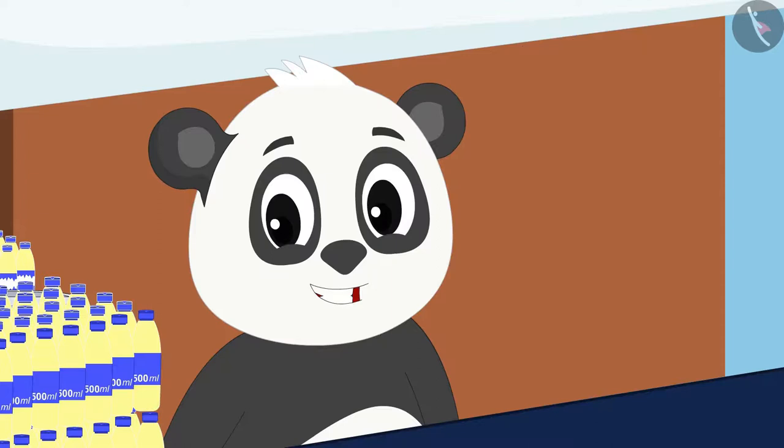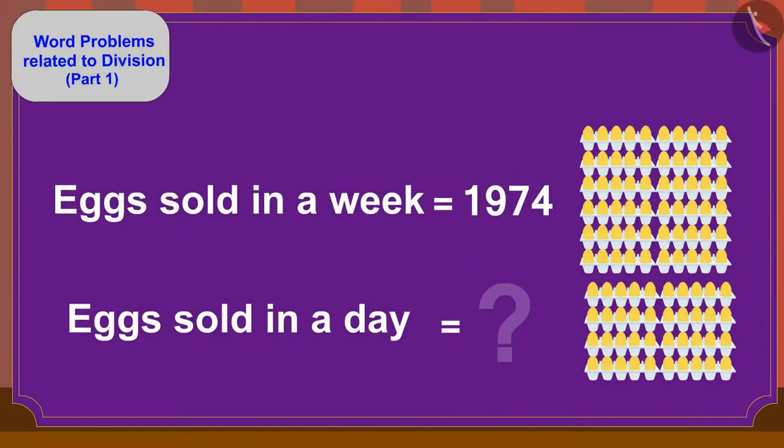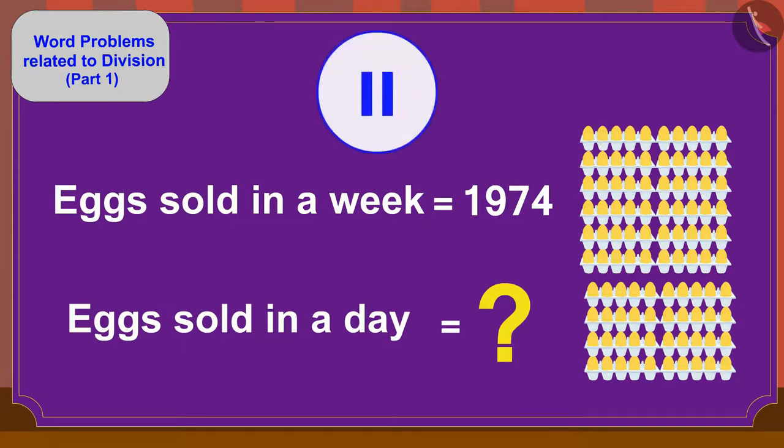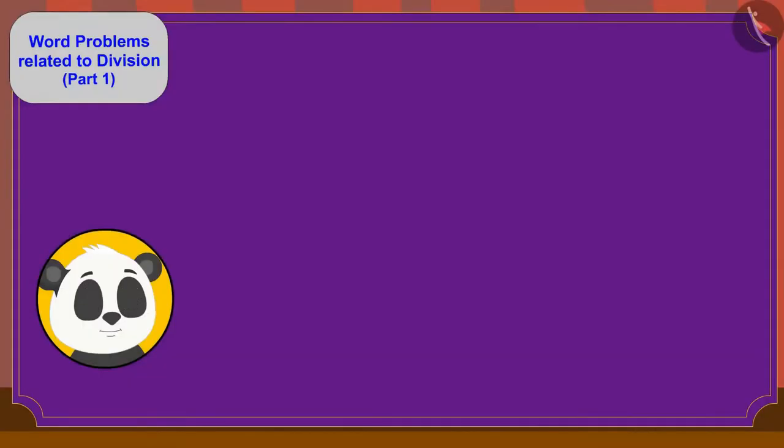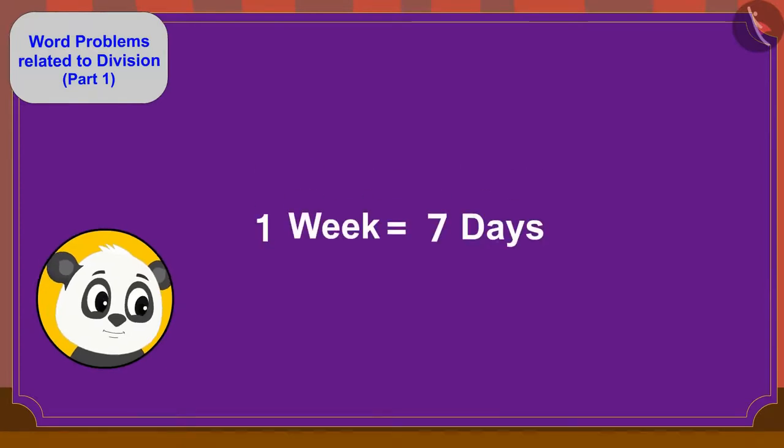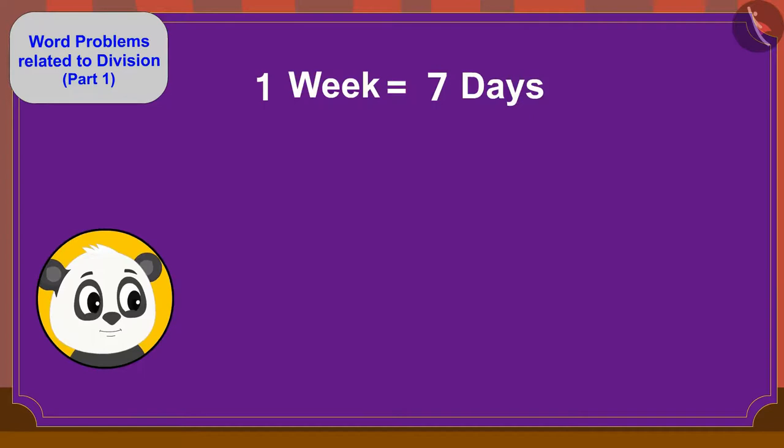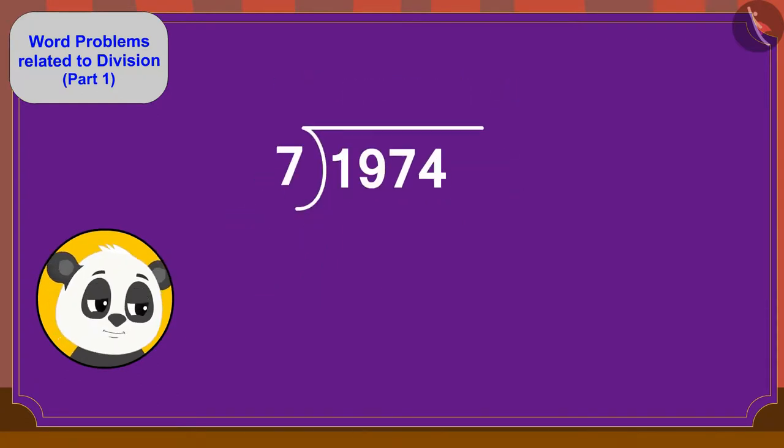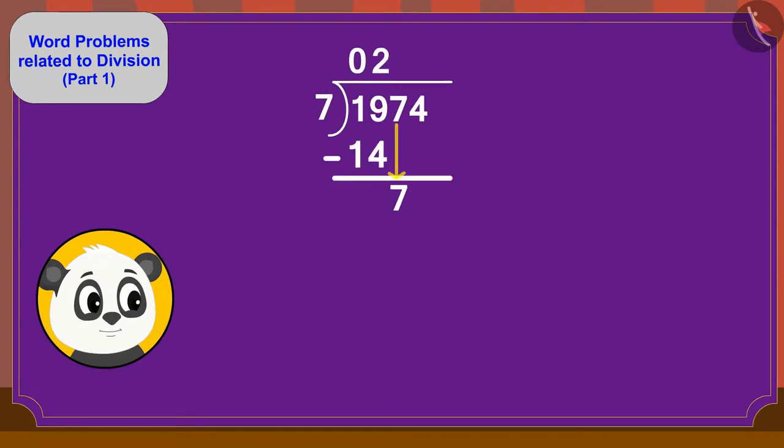Golu thought, can you find an answer to this question, children? If you want, you can stop the video and find the answer. Yes, there are seven days in a week, therefore to find a solution to this question we have to divide 1974 by 7. Golu will have to sell 282 eggs a day.